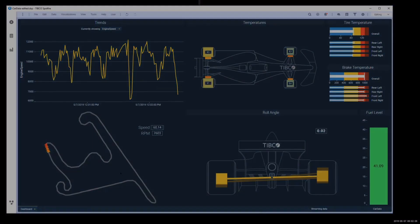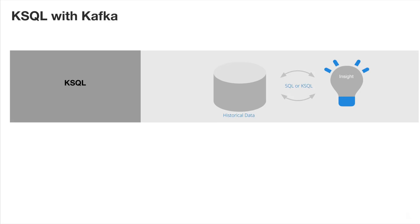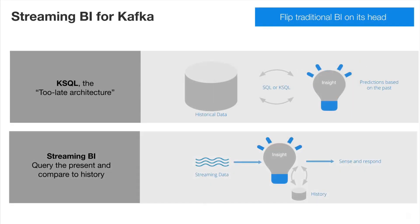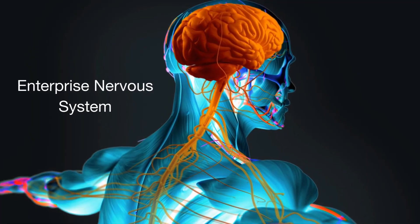Now some developers try to use KSQL and a traditional database to do this, but the problem is that's like trying to win a race only looking through your rearview mirror. We call this the 'too late architecture.' Who cares if you discover today that you could have won yesterday's race — it's too late. Streaming BI flips this model on its head so you can sense what's happening live, compare it to history, and respond in that critical business moment. That's the event-driven enterprise at work.